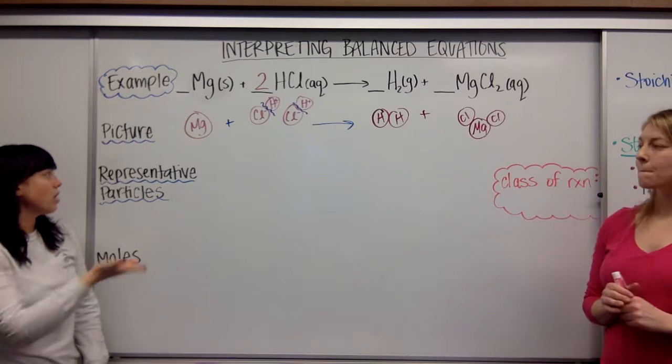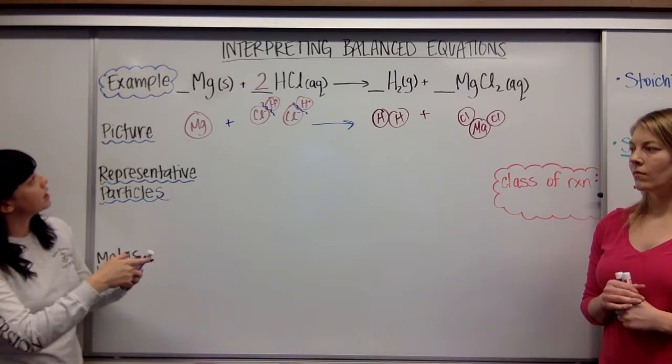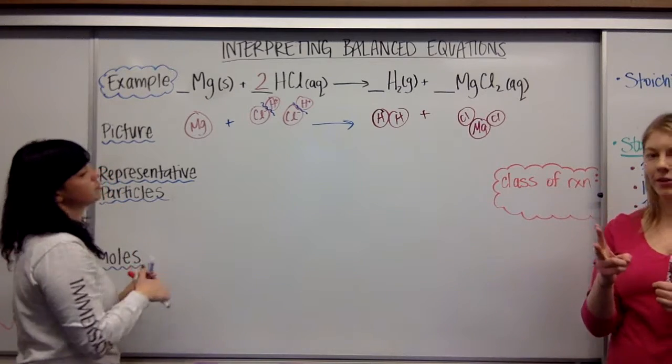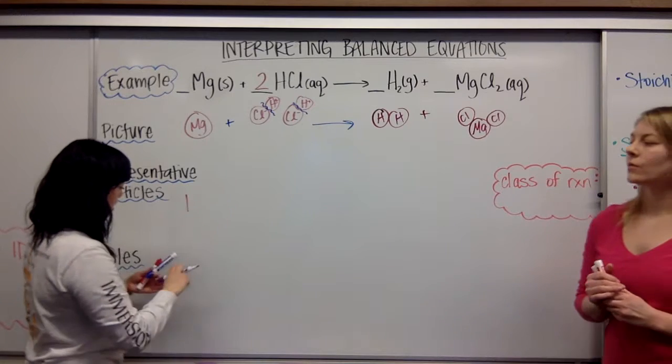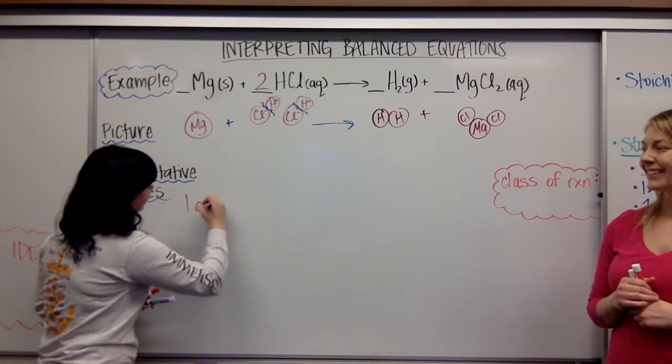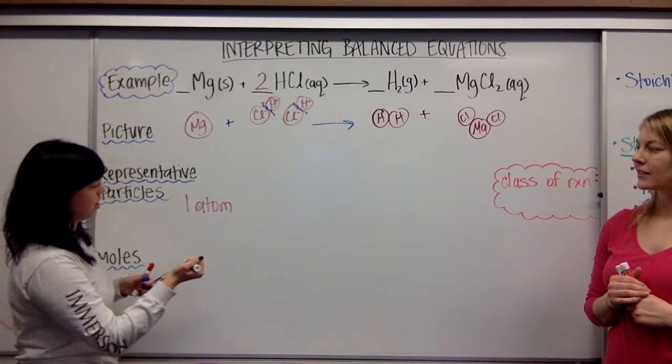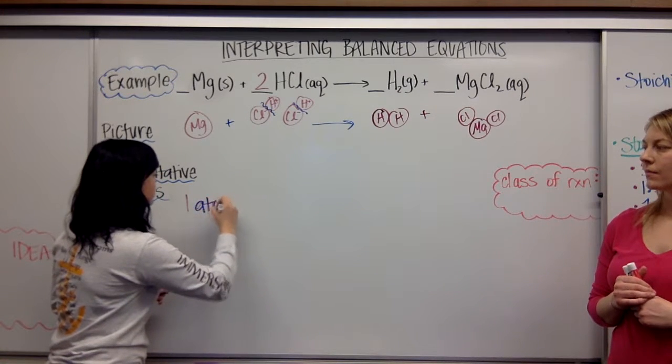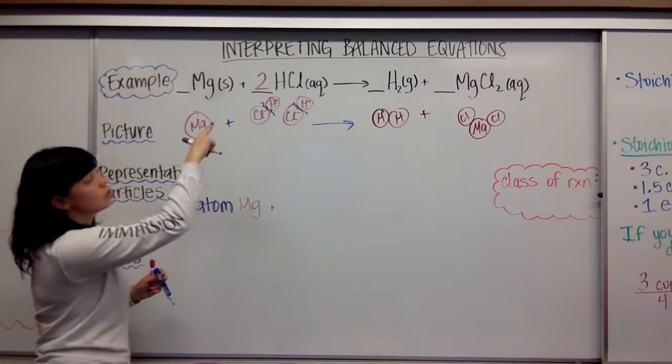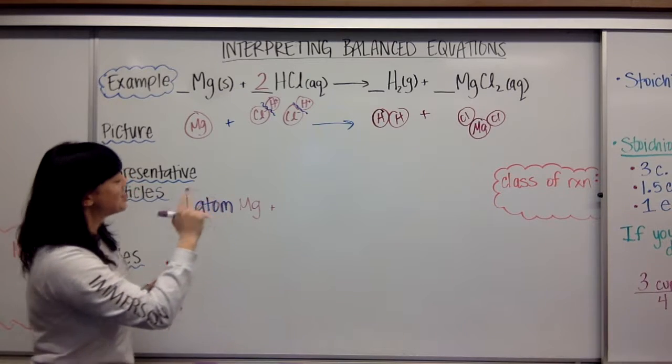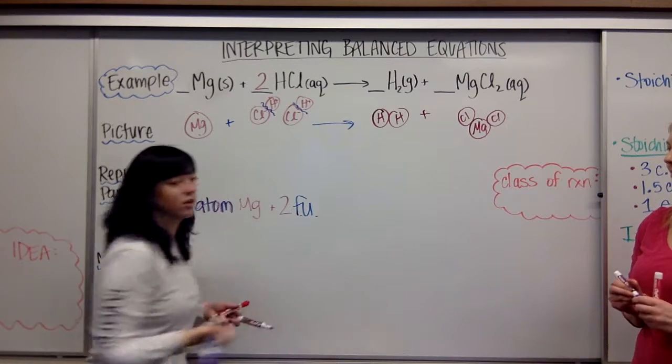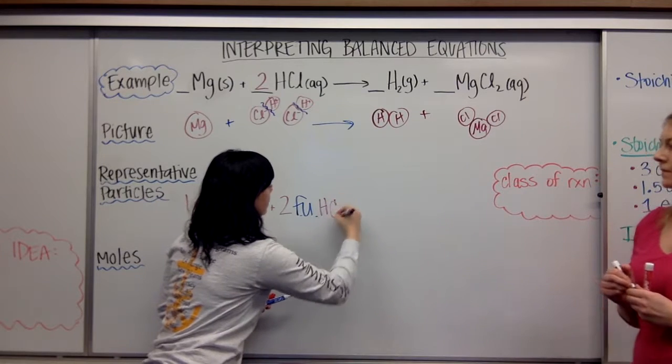The next thing we do is we interpret that into our representative particles. So my first is magnesium metal. So I have one, remember that our representative particles are atoms, formula units, and molecules. So that's what we're using here. So I have one mole, oh no, sorry. I have one atom, one atom, I'm getting ahead of myself, one atom of magnesium. I don't know how you want to do this. I guess I'll put this blue. One atom of magnesium.